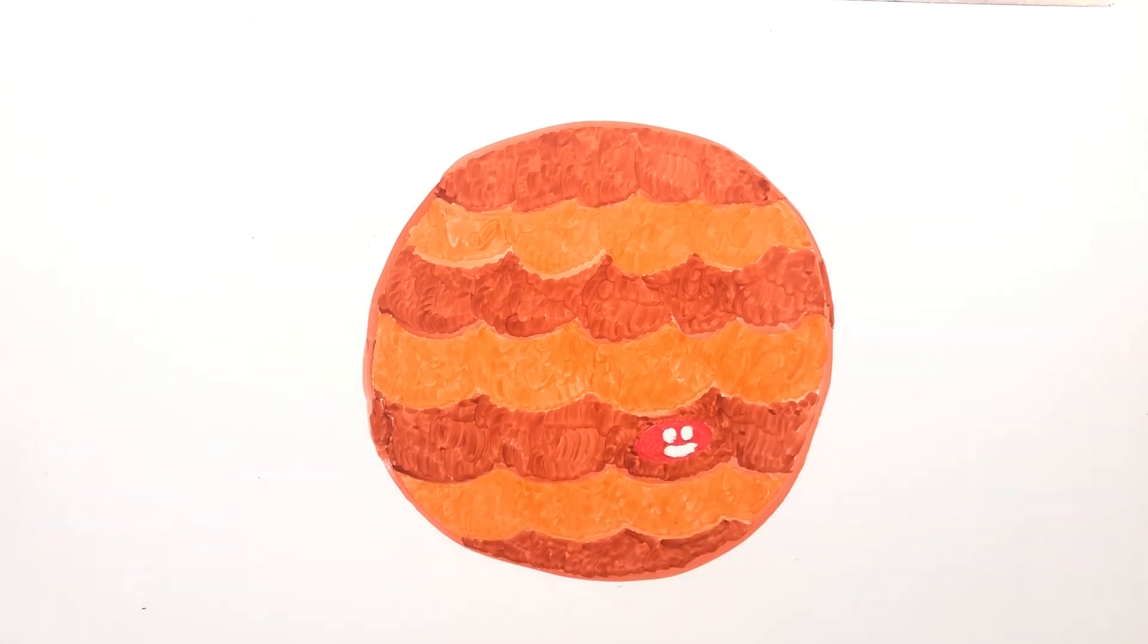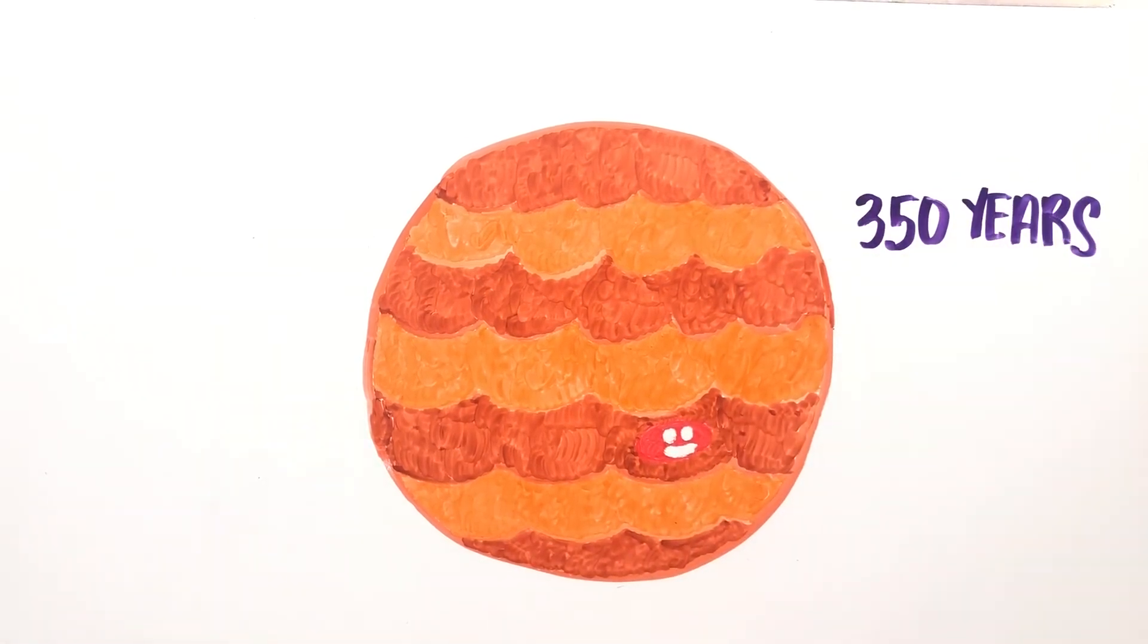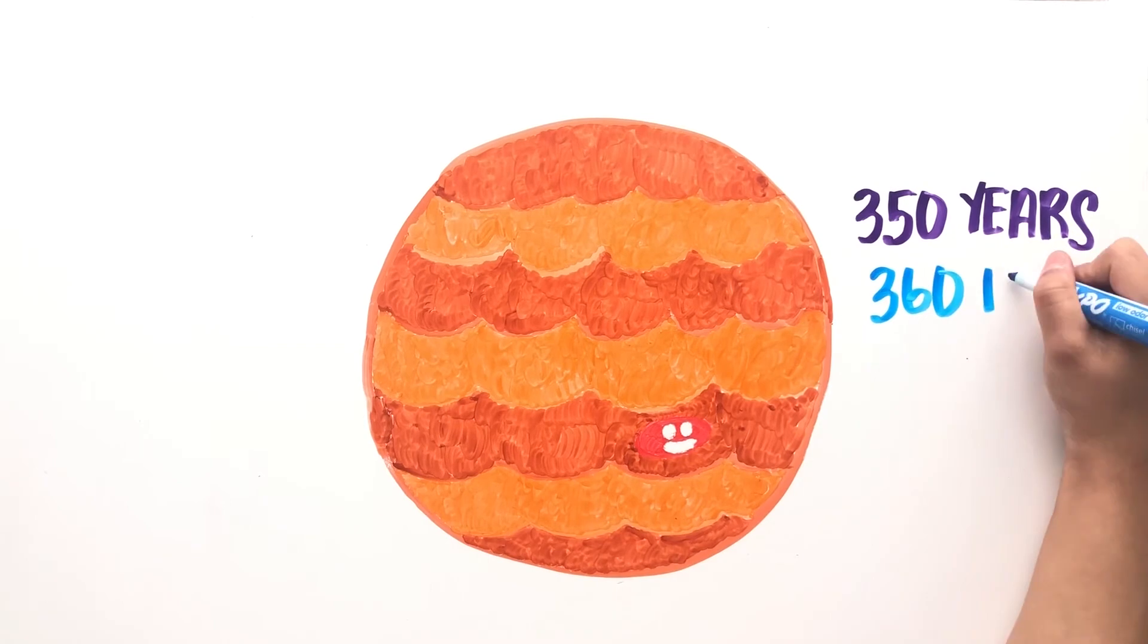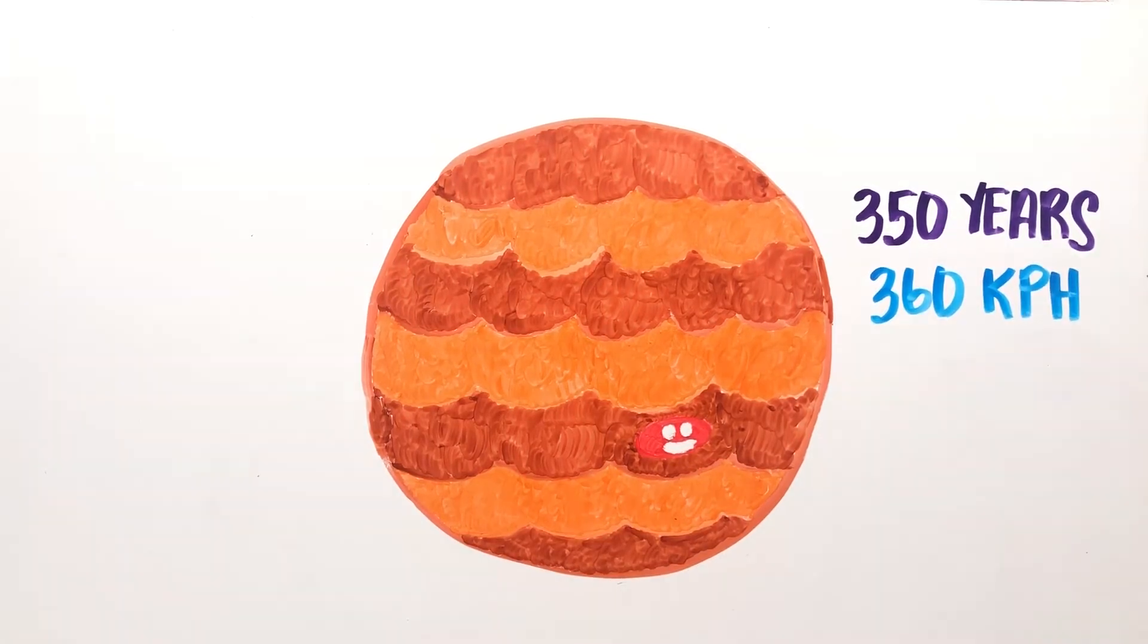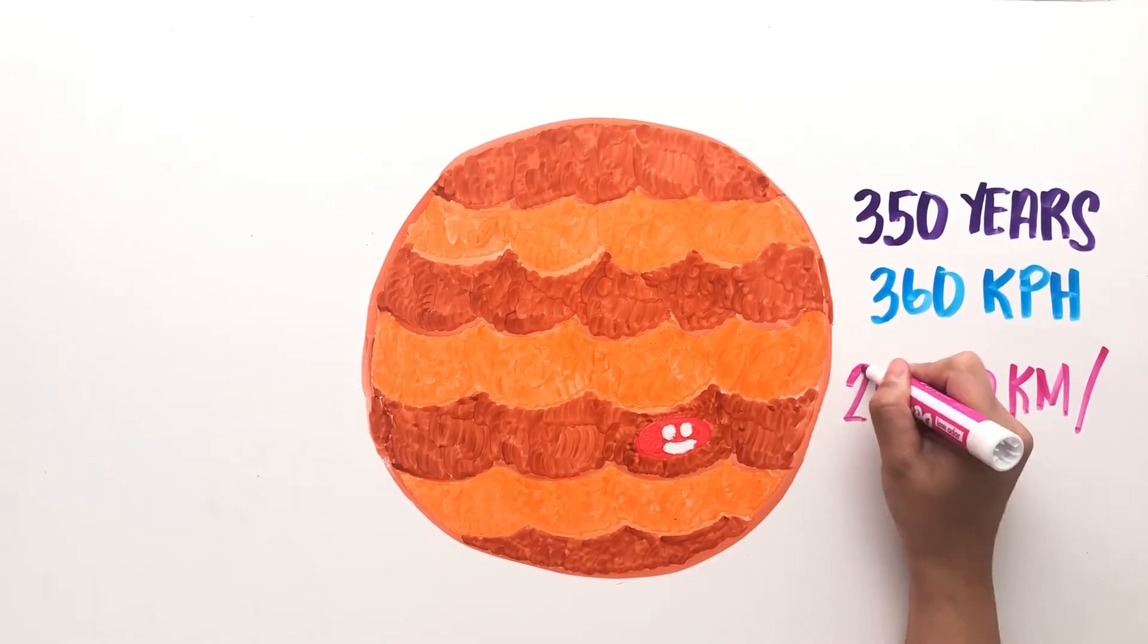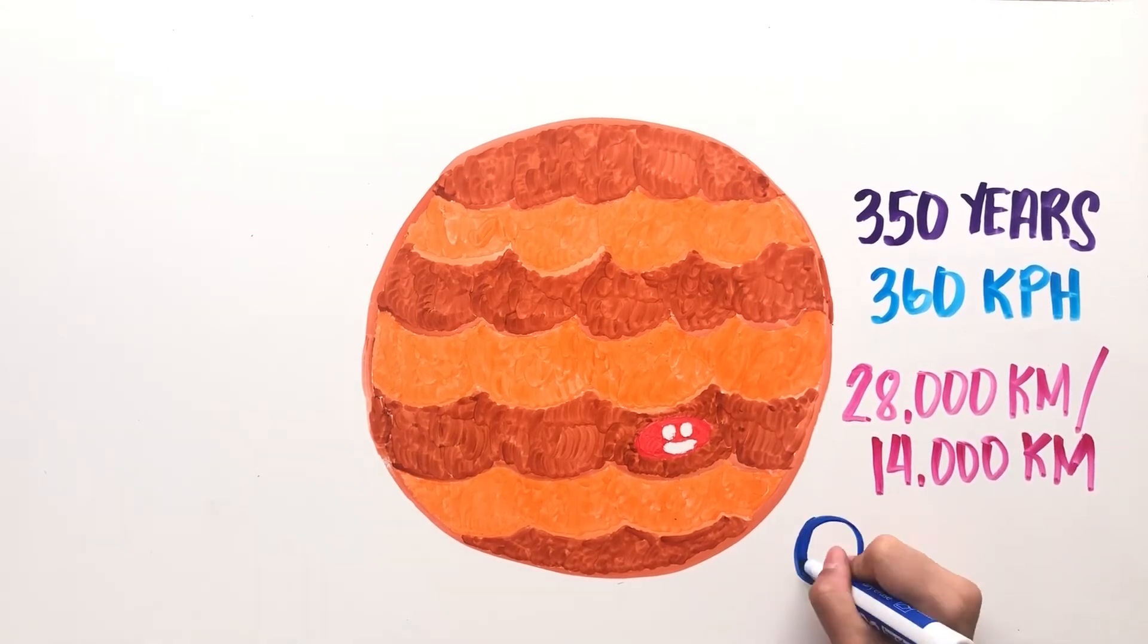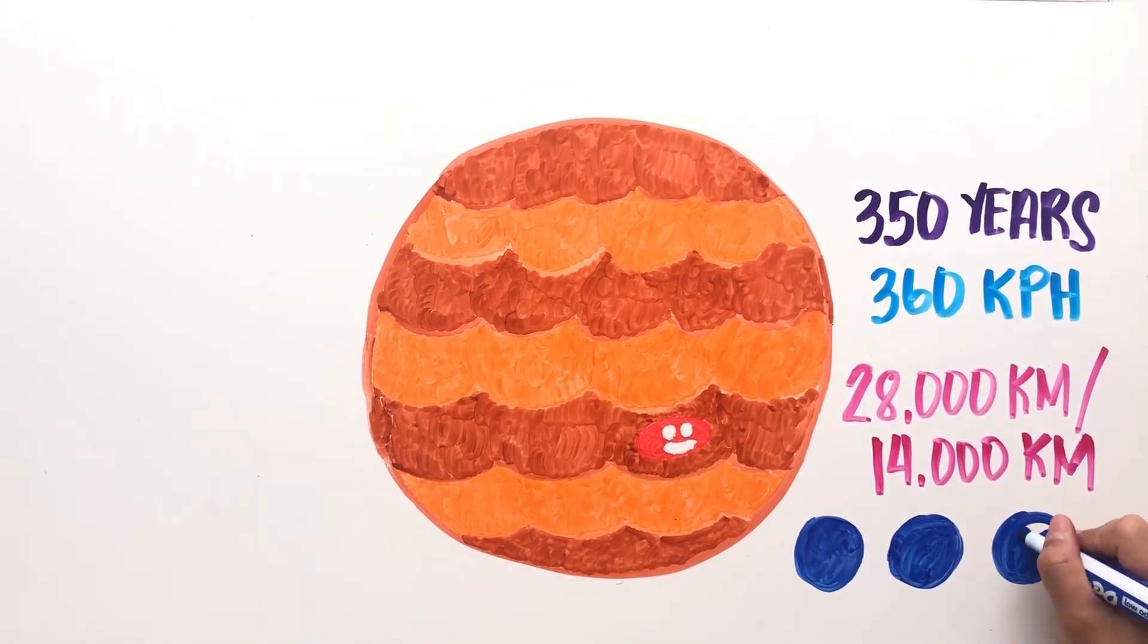The Great Red Spot has been around for at least 350 years and spins at 360 kilometers per hour. It is 28,000 kilometers long and 14,000 kilometers wide, three times the width of the Earth's diameter.